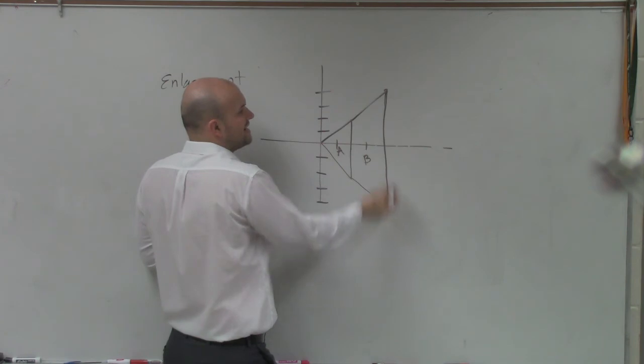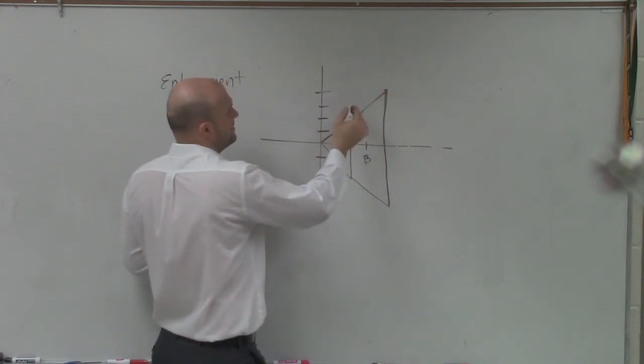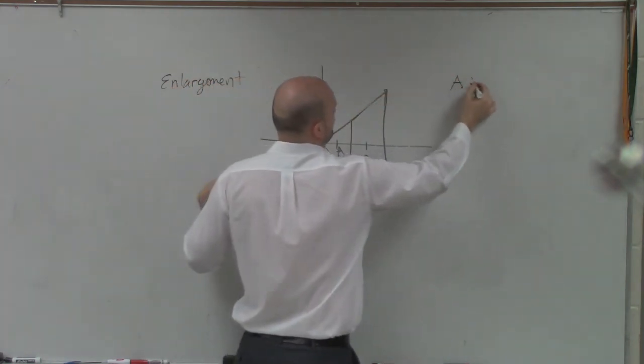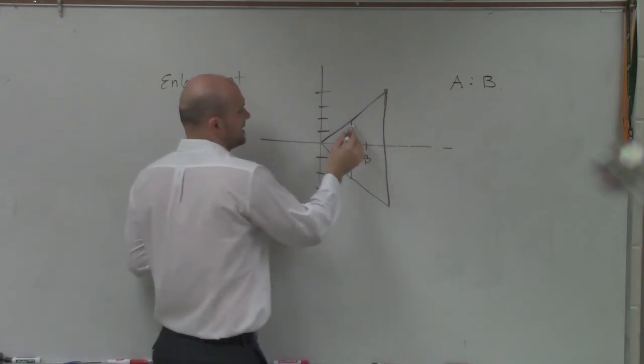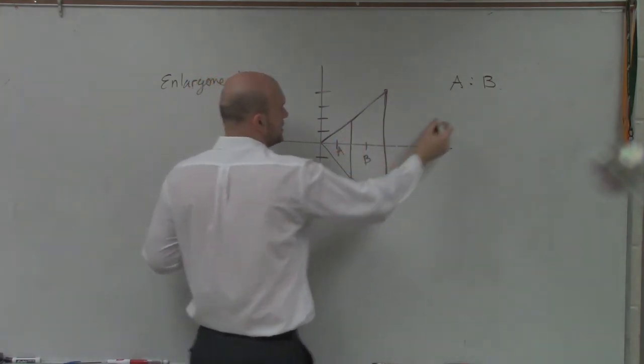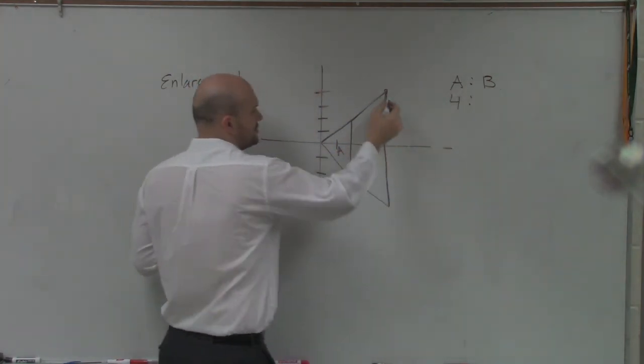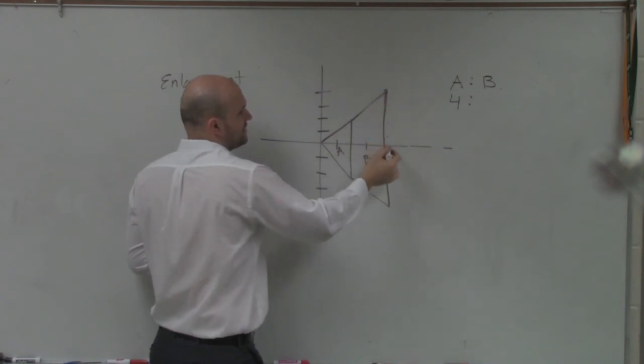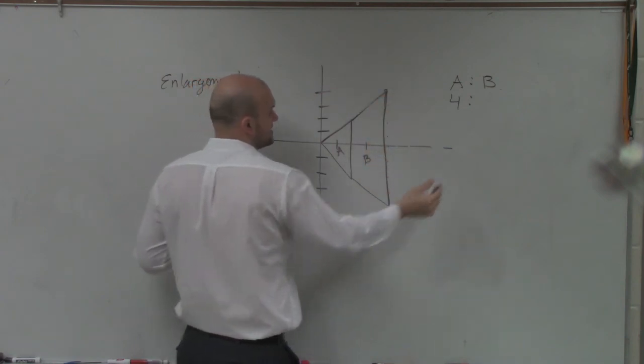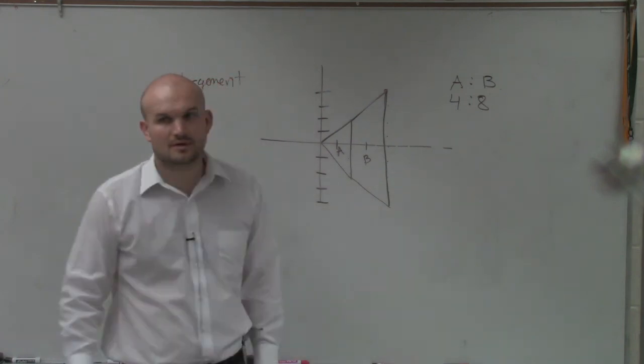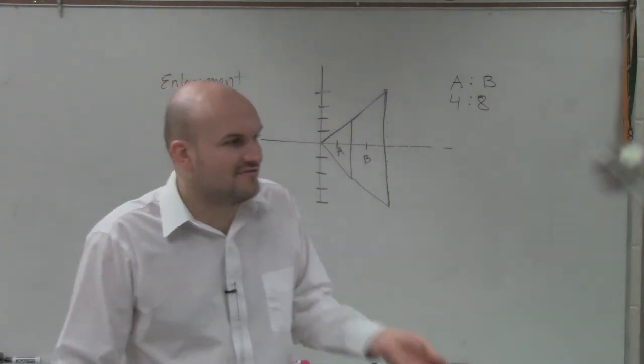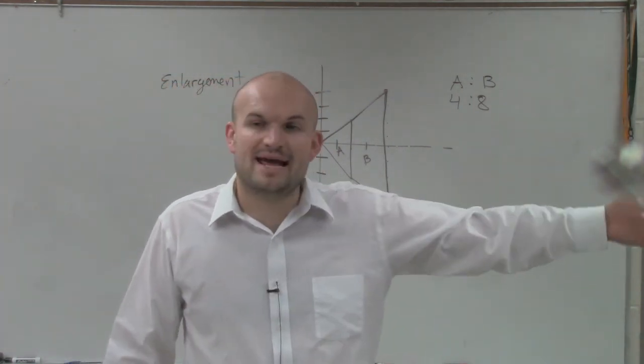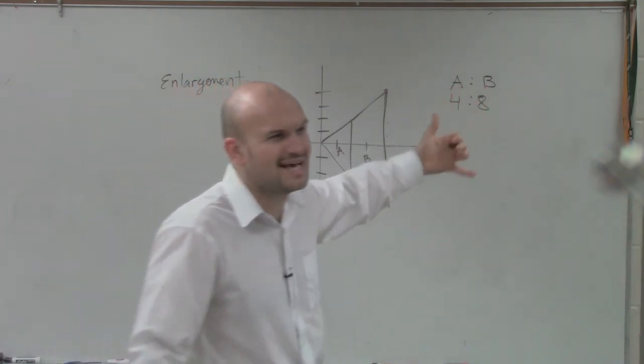So if I create this side here, I have from A to B. So we have A to B. So A is 1, 2, 3, 4. B is 1, 2, 3, 4, 5, 6, 7, 8. So I'm saying it started at 4, and then it expands or enlarges up to 8. So what is that k?